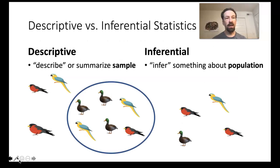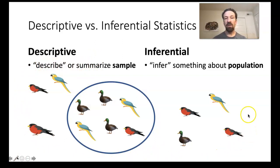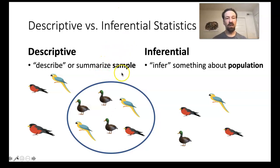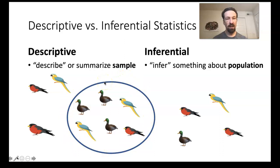Let's start by differentiating between descriptive and inferential statistics. To accomplish this, we need to know the difference between a sample and a population. The population is the large group of individuals or organisms that we want to describe—for example, a bird community, all of the birds pictured on the screen—and we might want to make generalizations about that entire population. However, we're not typically able to measure all individuals; it takes too much time or they're too hard to catch. So instead, we usually look at just a subsample of the population.